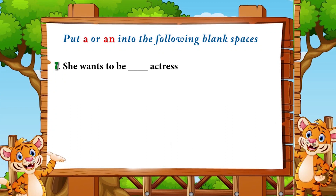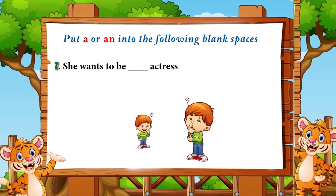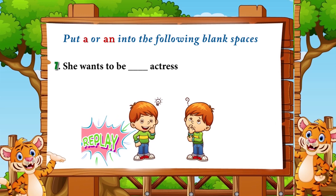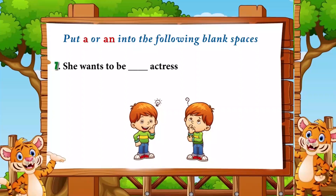Number seven: 'She wants to be ___ actress.' The answer is 'an' — 'she wants to be an actress' — because 'actress' begins with the vowel sound 'a.'